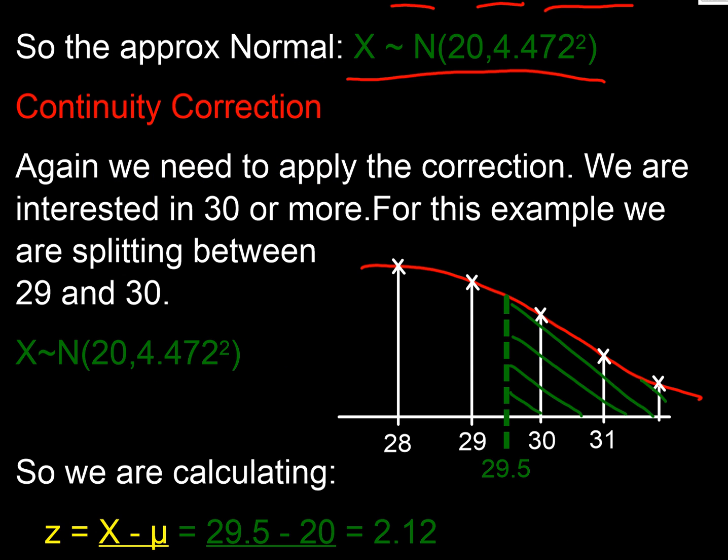But again we've got to do our continuity correction, so let's have a quick look at that. Here we're interested in 30 or more, so 30, 31, etc. So the question is where are we going to cut our line? There's 29 there. Well, 29 is very much, it's definitely not in the 30 or more. So what we're going to do is our midpoint, we're going to create there, it's going to be 29.5, because that's halfway between 29, which is not in our area, and 30, which is in our area. And again we're going to find the area from 29.5 or more, that's going to be the x value we're going to put in for our z.